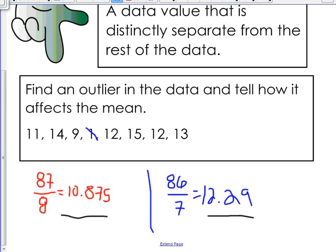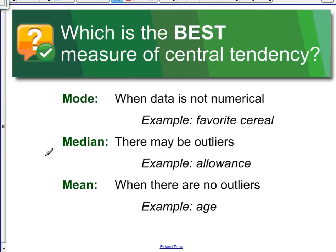So the second thing that we're going to be talking about is which is the best measure of central tendency. There is definitely a time and a place when finding the mode, median, and mean would be a better option, alright, in the real world. You wouldn't use all three of these to analyze every single set of data you had.